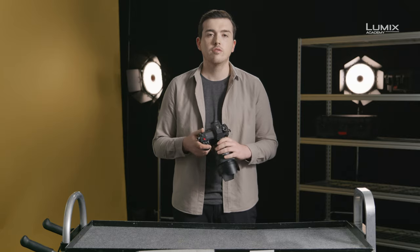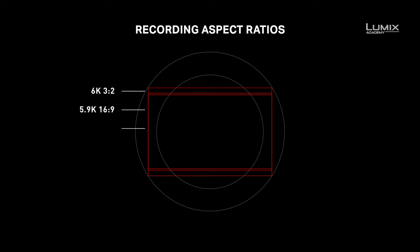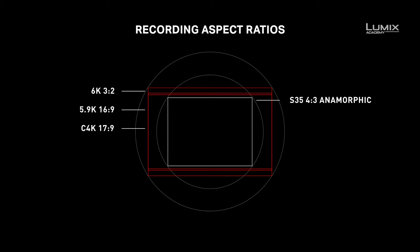The S1H comes equipped with a 24-megapixel sensor that's capable of recording up to 6K resolution in 3x2 aspect ratio and 5.9K resolution in 16x9. On top of these, you have the ability to shoot in Cinema 4K resolution — the standard for cinema — UHD 4K, the 16x9 standard for television, 4x3 Super 35 Anamorphic 4K, as well as 1080p Full HD modes.